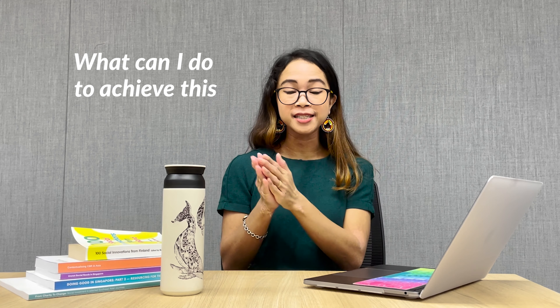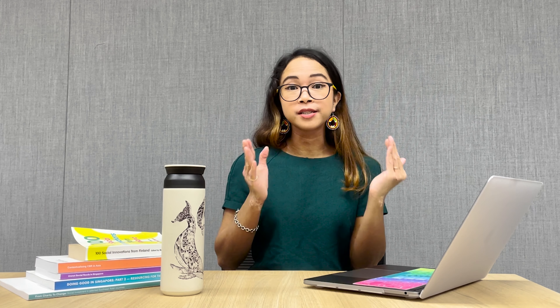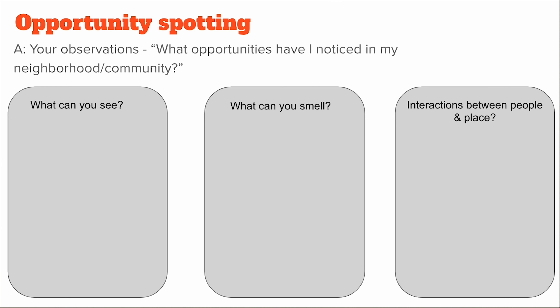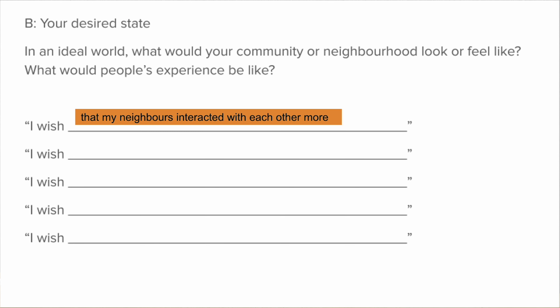This ideation exercise will help to answer the question: what can I do to achieve this desired state? The desired state being the opportunity that you spotted. For example, the issue you identified was maybe that your neighbors don't really interact with each other, and your desired state is for them to interact more. How might we get there? This is the question that this exercise aims to answer.